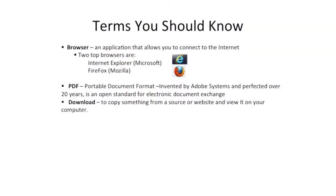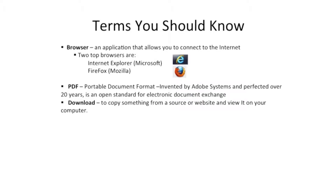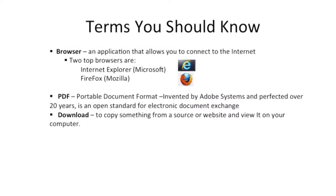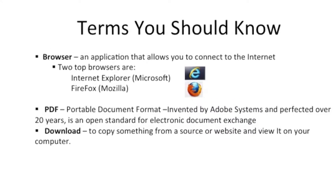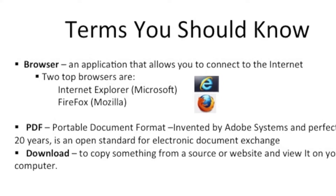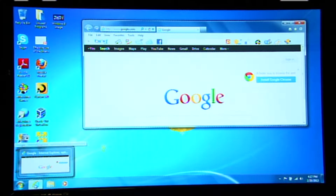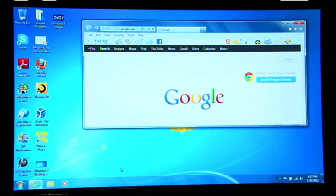A couple more terms before we begin working with the Internet. A browser is an application that allows you to connect to the Internet. There are two top browsers currently available. One is Internet Explorer by Microsoft, and the second one is Firefox by Mozilla. Right now, we are working with Internet Explorer. Sometimes I'll find myself using both browsers at the same time — one to check my email, another to do a search.